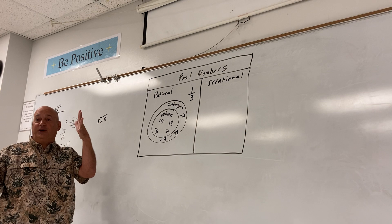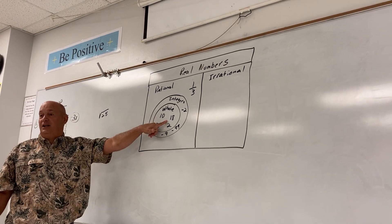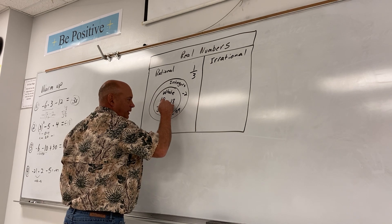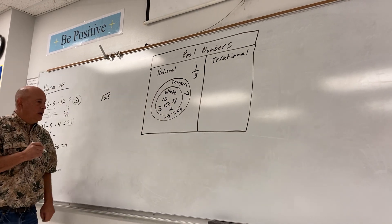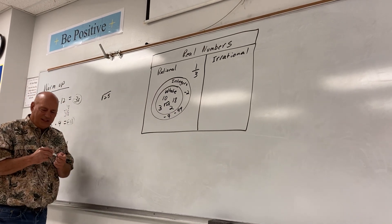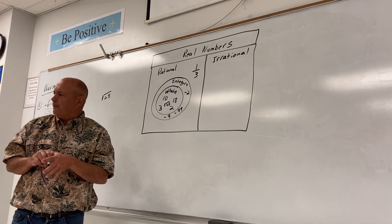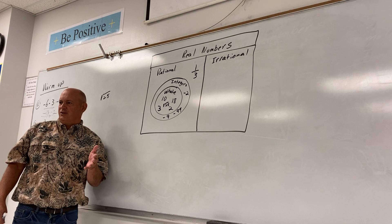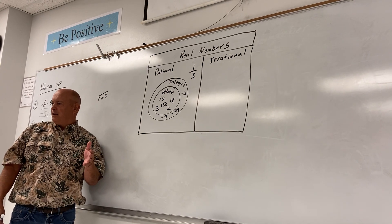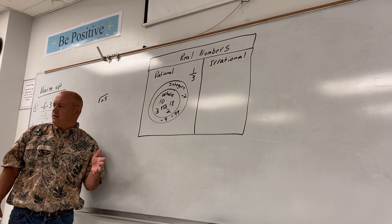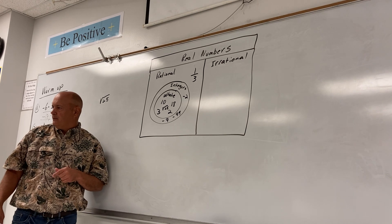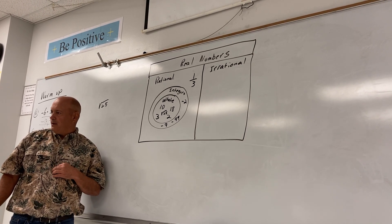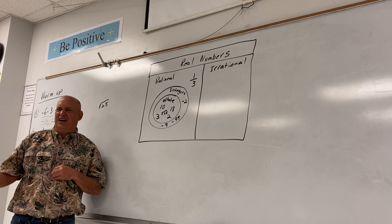Somebody tell me where that would fit in this chart. Whole numbers, he says. Y'all agree with him? Yes. I do too. What's the square root of 25? Five. Do y'all agree with Josiah that five goes right here? Yes. Square root of 25 is a whole number. Good.